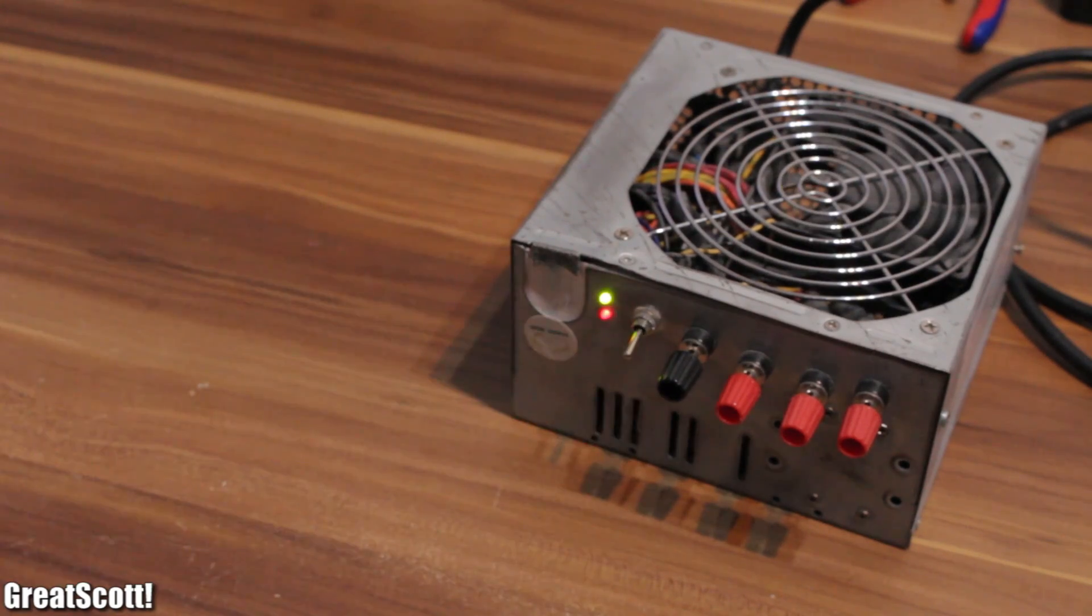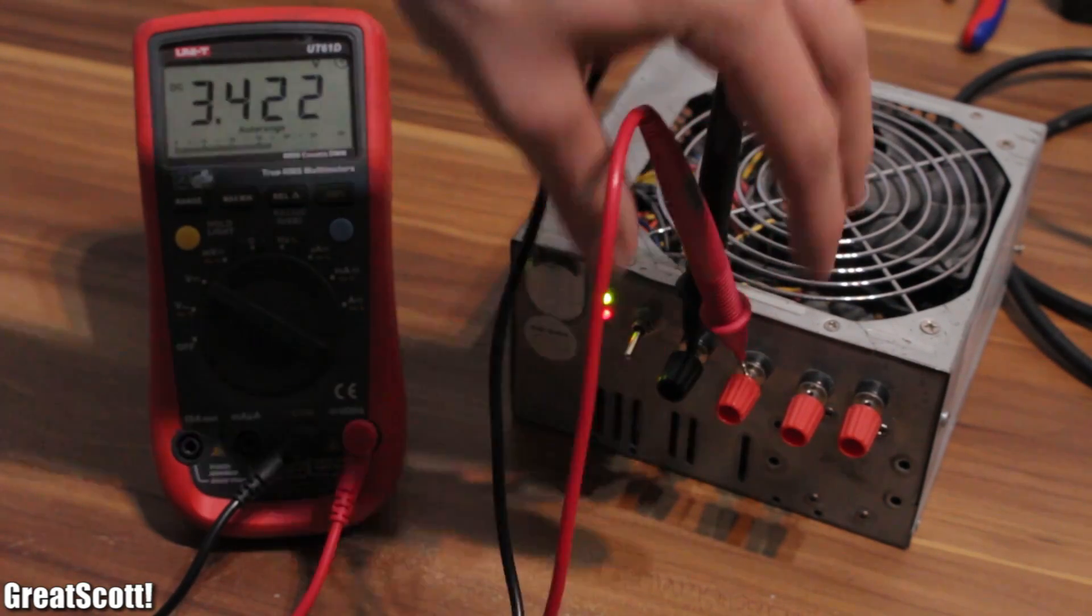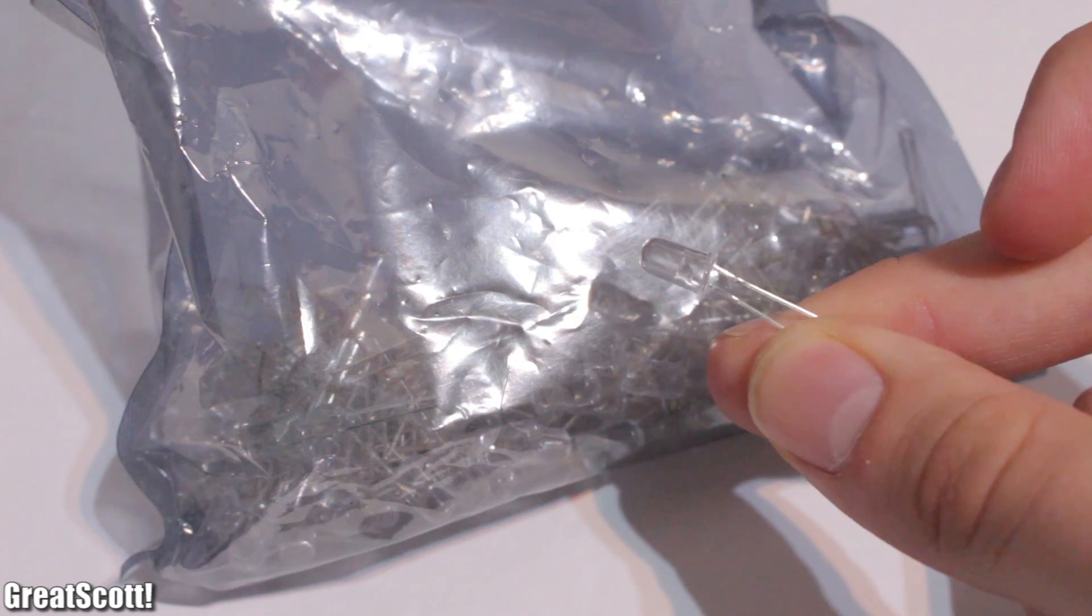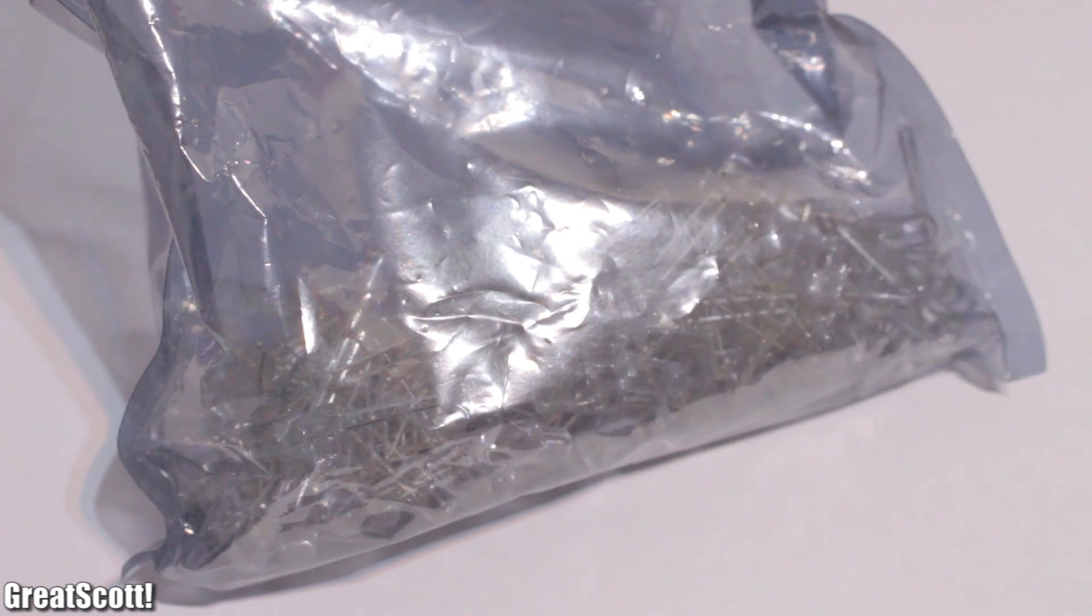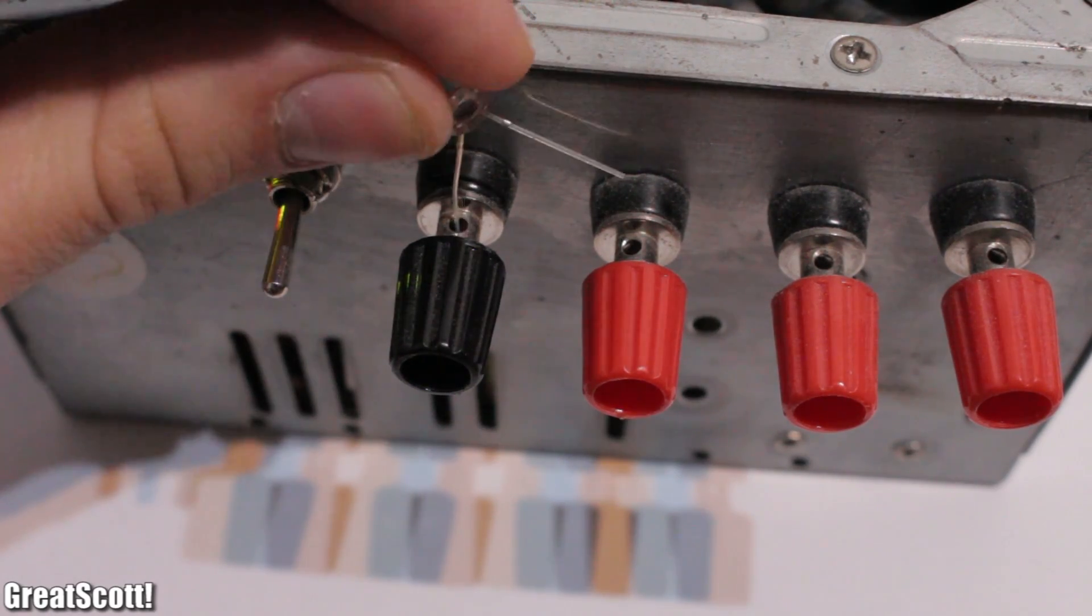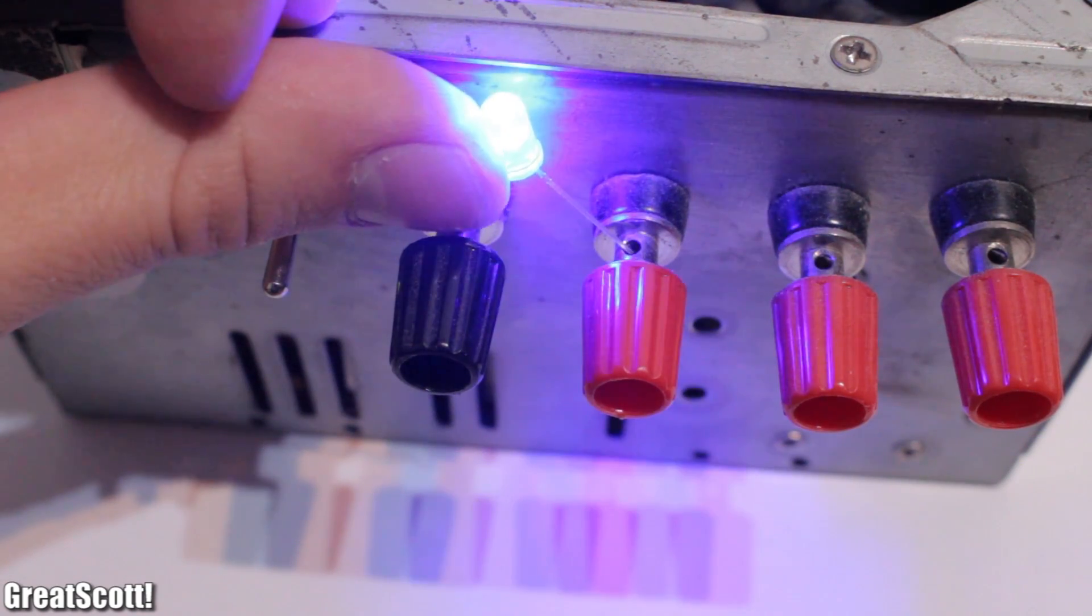Let's imagine you have a 3.3 volt power source and a blue LED with a forward voltage of 3.3 volts. So you don't need a resistor, right? Well, it does work...